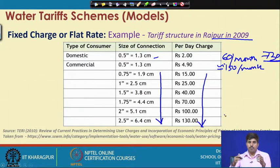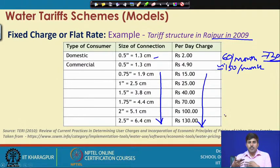This is a clear example of how fixed or flat charges are deployed. There could be further arguments that domestic connections could be further differentiated — for people in low income groups, a similar diameter connection could be priced lower compared to those from higher income groups. Those kinds of amendments are possible, but as a case example, this is how a fixed charge or flat rate system works.